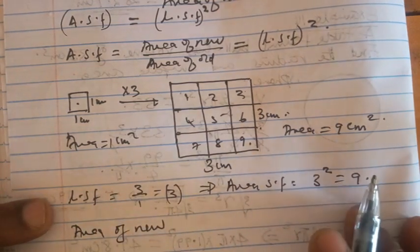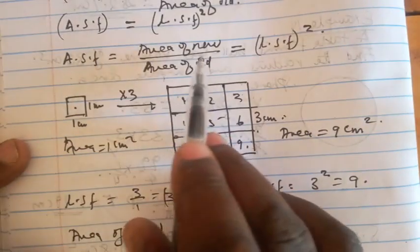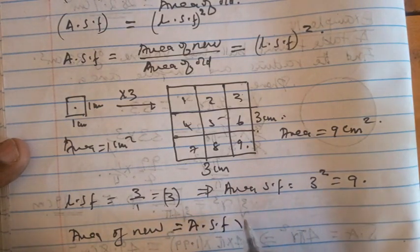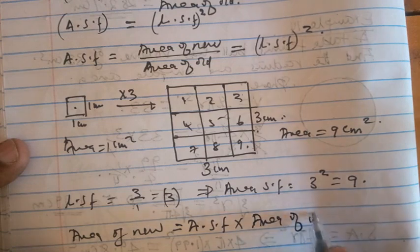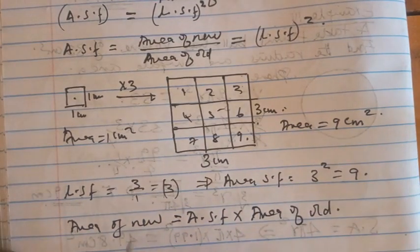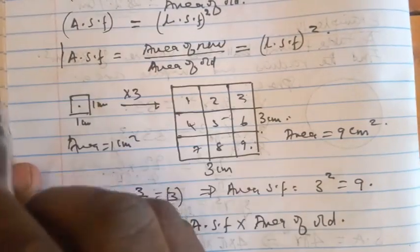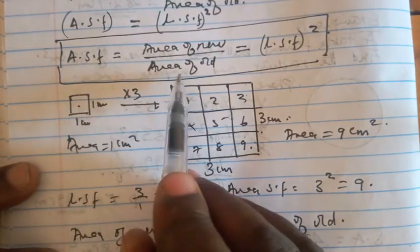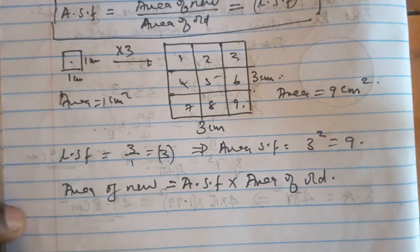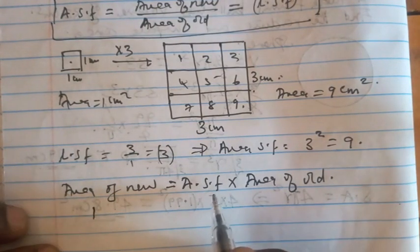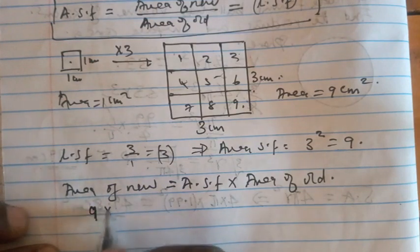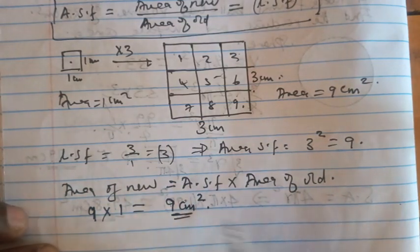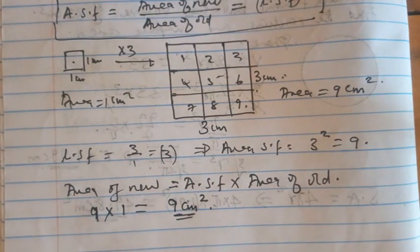This means the area of the new figure is given by the area scale factor times the area of the old. So the area scale factor of nine times the area of the old, which is one centimeter squared, gives us nine centimeters squared — which confirms our earlier result.